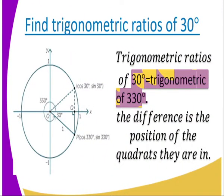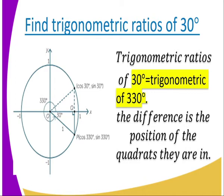We start by looking at the trigonometric ratios of a negative angle — negative 30 degrees. You can see where it is falling. For negative angles, we take the clockwise direction from the x-axis. As you can see, negative 30 degrees is in the position where we would have 330 degrees. That is why we say the trigonometric ratios of negative 30 degrees are related to those of 30 degrees, with the difference being the positioning in the quadrant.